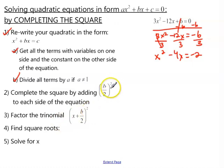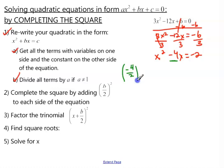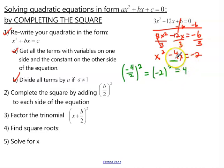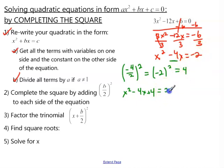We want to complete the square by adding b over 2 squared to each side of the equation. First, let's calculate what that actually is. b is the coefficient of x, so we have negative 4 over 2, quantity squared. Negative 4 divided by 2 is negative 2, and when we square that, we get positive 4. So we add 4 to both sides: x squared minus 4x plus 4, and on the right side we add 4 to negative 2, which gives us positive 2.